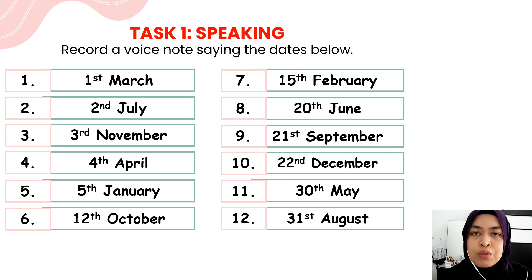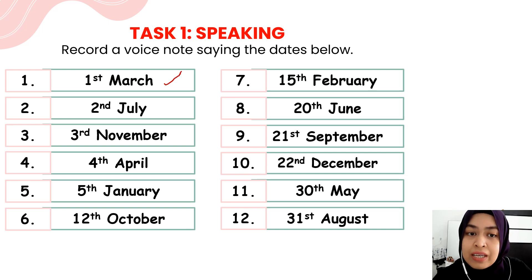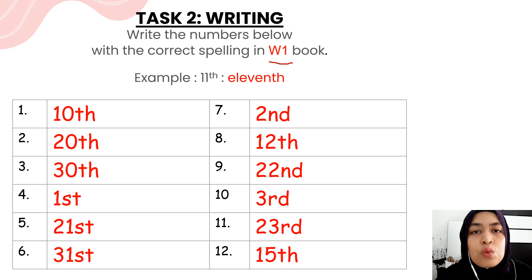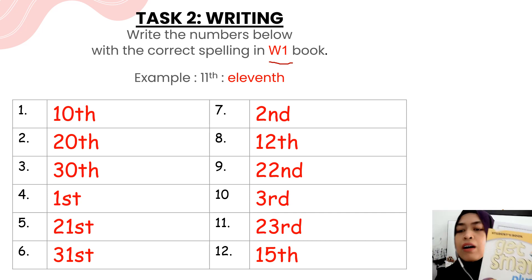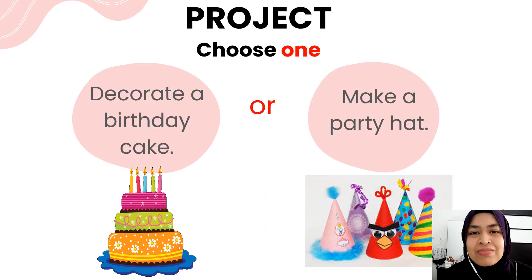Alright, so for today's lesson we have two tasks. Task number one: record a voice note saying the dates below. For example, for number one, you should say 'first March.' Task two: write the numbers below with the correct spelling in your W1 book. You can also refer to your CEFR textbook. For example, if I give you the number eleven, you need to write down the word 'eleventh.'